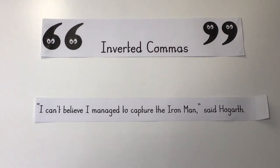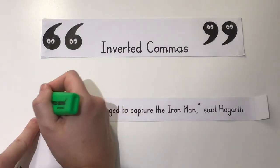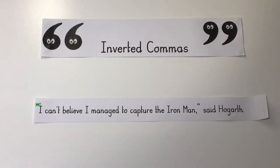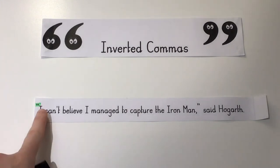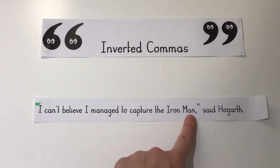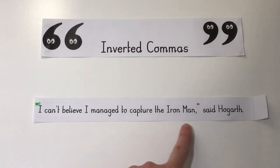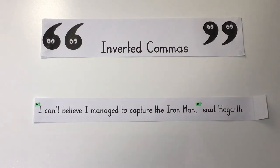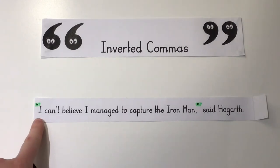At the beginning of the speech we have our opening inverted commas — these are the ones which look like the number 66. Notice where I've placed them: they're at the top of the first letter. Then we finish our speech and have our closing speech marks. Next, I need to make sure that my sentence begins with a capital letter, so where the direct speech starts the first word must have a capital letter.